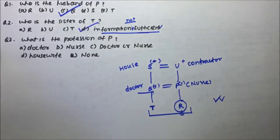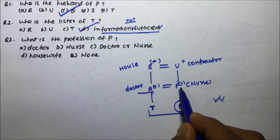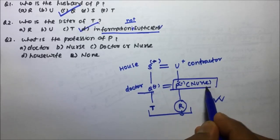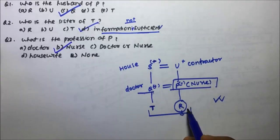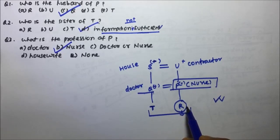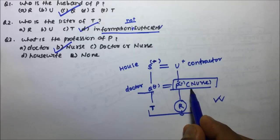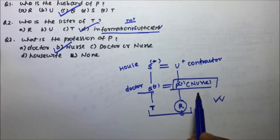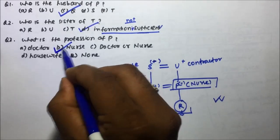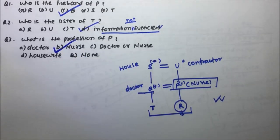What is the profession of P? The profession of P is nurse, because P is the mother of R and the data clearly states that the mother of R is a nurse. So option B is the correct answer. I hope you understood how to solve small puzzle questions of blood relation. Thanks a lot for watching the video.